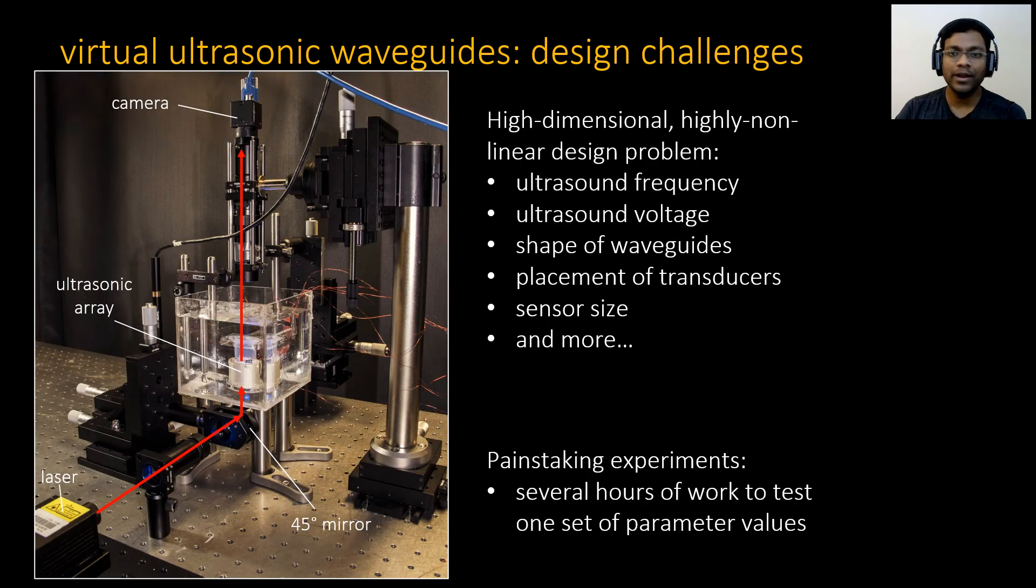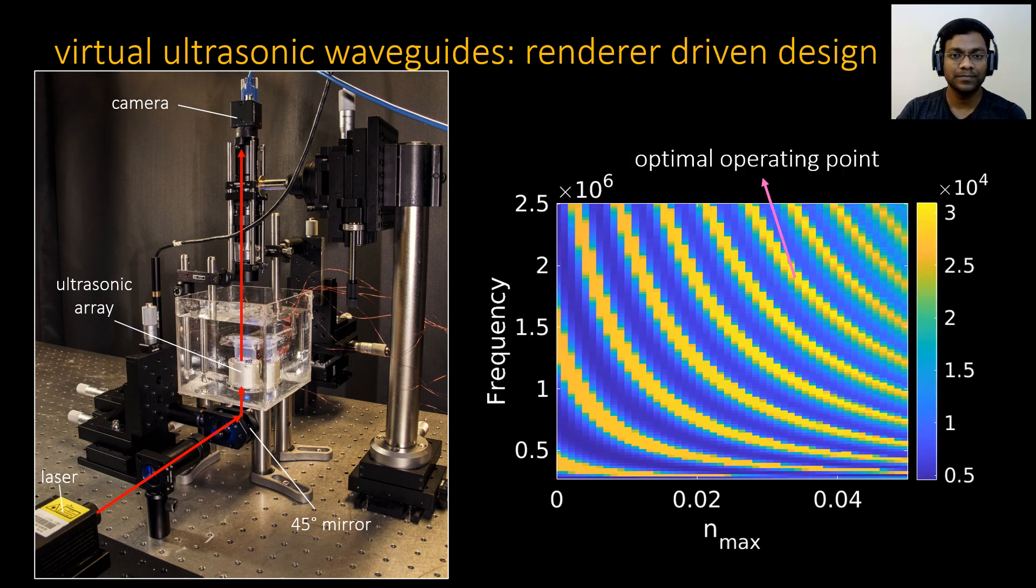The ability to accurately and efficiently simulate measurements from this new imaging technique is important for optimizing its performance. In particular, this experimental setup has quite a few parameters to be tuned. We can change the ultrasound frequency, voltage, shape, placement of transducers, and more. From first-hand experience, they take several human weeks, if not months, to design these systems. Using our renderer, we can virtually evaluate the effect of these parameters, and in fact, we have already run a large number of simulations through which we have found interesting properties and optimal operating points for this type of hardware.